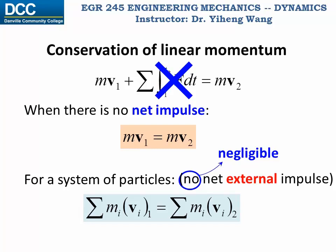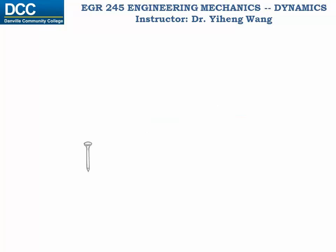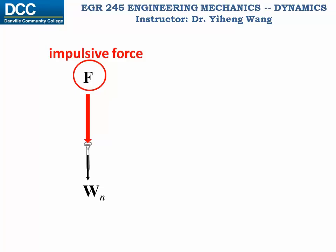So when can we consider the external impulse to be negligible? Let's look at an example of a hammer pounding on a nail. Looking at the nail's free body diagram, it is subjected to its own weight force, and the hammer exerts a large pounding force on the nail. This pounding force can significantly change the nail's momentum, so it is known as an impulsive force. By comparison, during the short pounding period, the weight force will not contribute significant impulse, so it will not greatly change the nail's momentum.